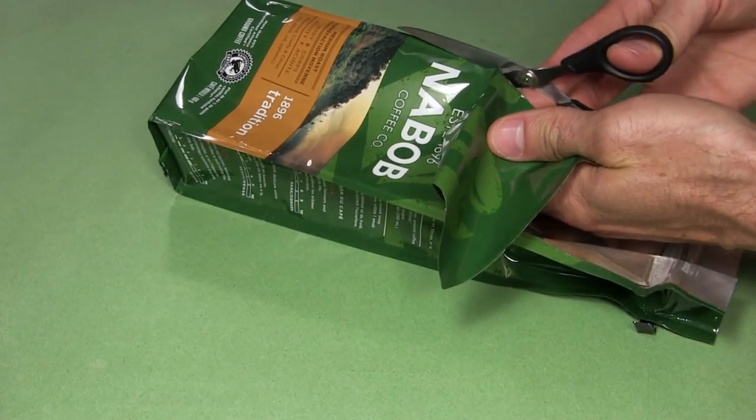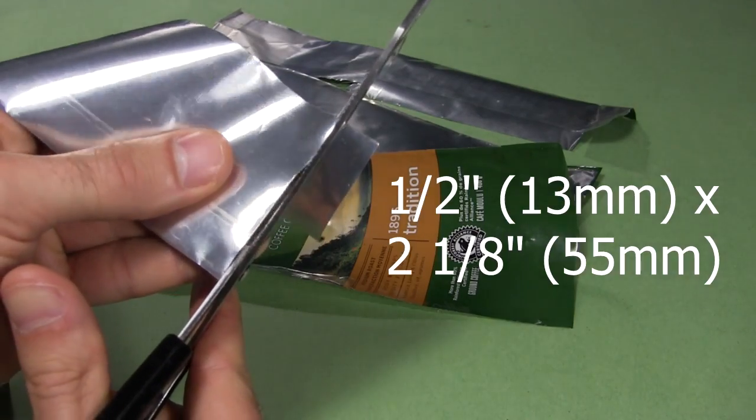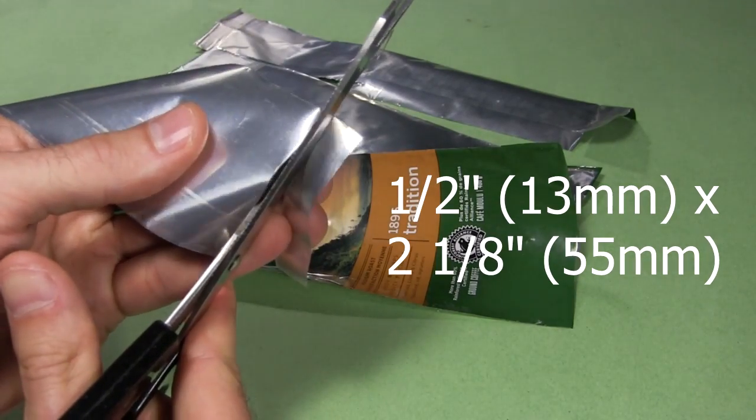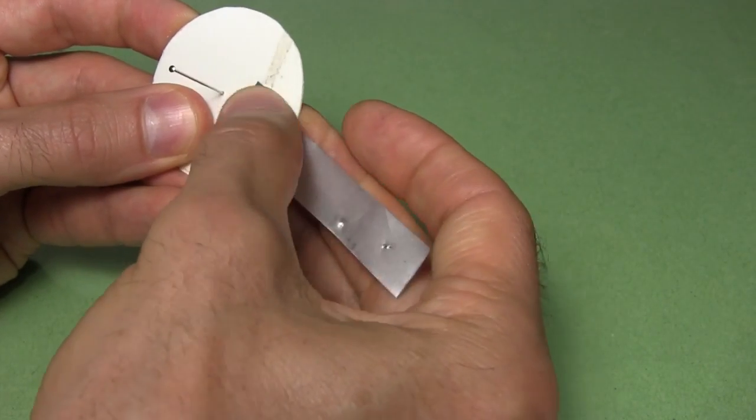Then I start cutting up the coffee bag, and cut a strip from it. The strip is a half inch wide by two and one eighth inches long. A piece of duct tape holds it onto the disc.